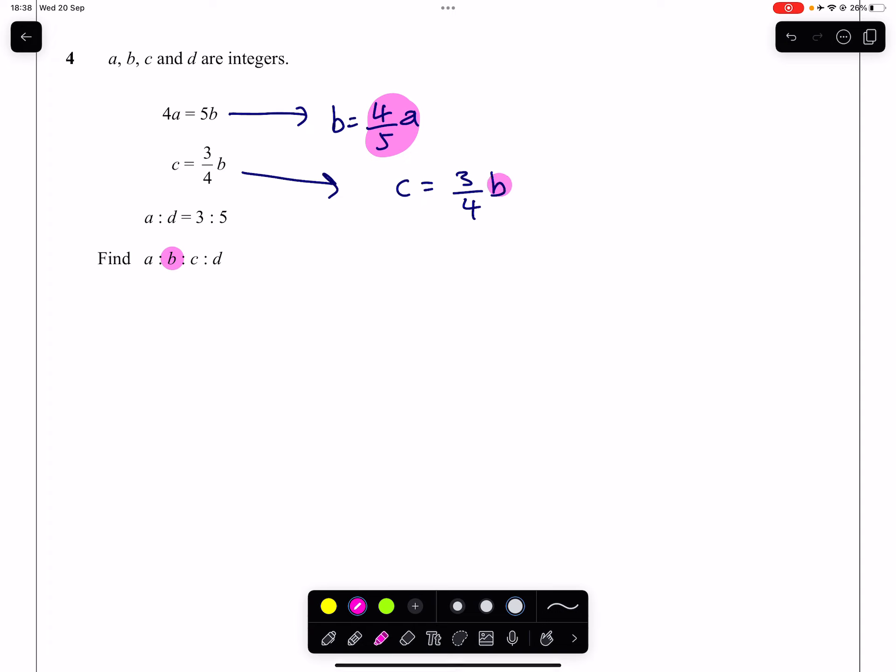So that four-fifths of A we can actually plug in here to get C in terms of A. So three-quarters of four-fifths of A is C. And simplifying that fraction, multiplying them and cancelling, we'll get three-fifths A, which gives us C.